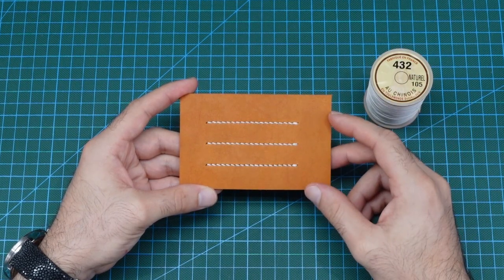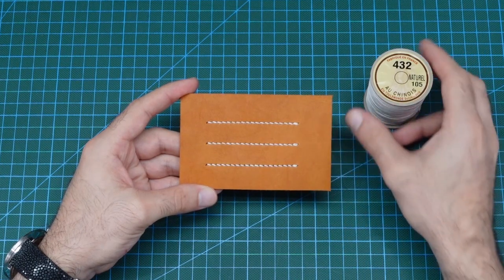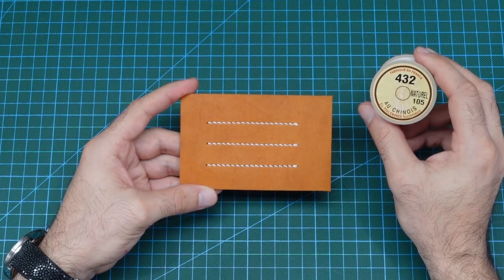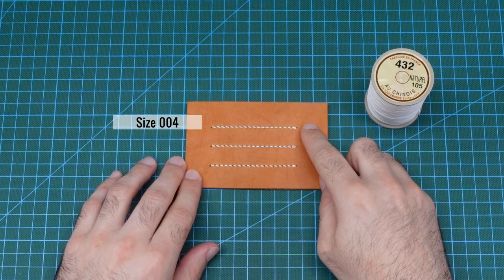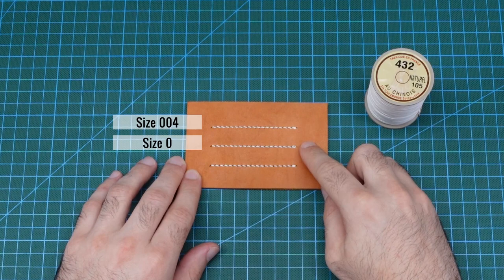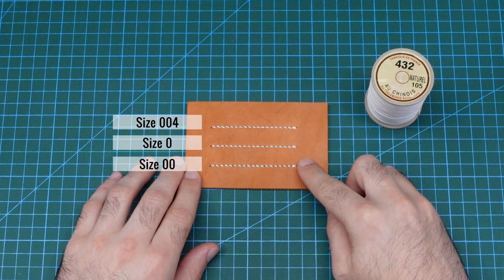I repeated the process using the two larger needle sizes, all using the same Lancable 432 thread. The top line is the smallest 004 needle.